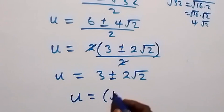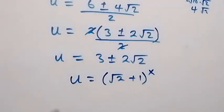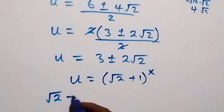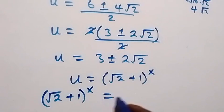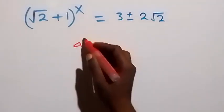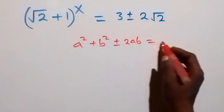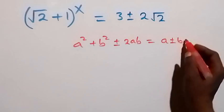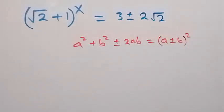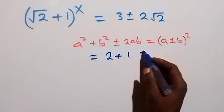Recall that we represented u as root 2 plus 1 raised to power x. So root 2 plus 1 raised to power x equals 3 plus or minus 2 root 2. Now the identity: when we have a squared plus b squared plus or minus 2ab, this is the same as a plus or minus b, all squared. Let's write what we have on the right-hand side in that format. We write 3 as 2 plus 1, then plus or minus 2 root 2.